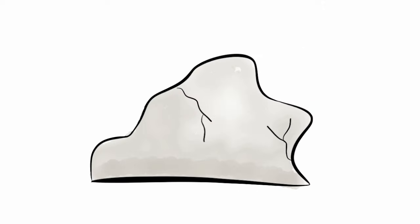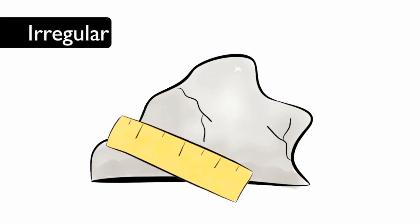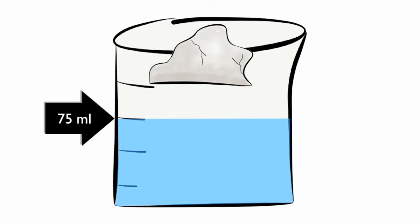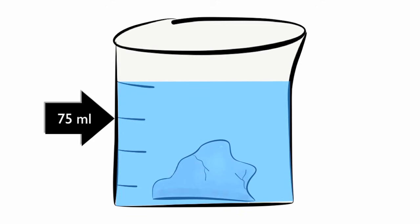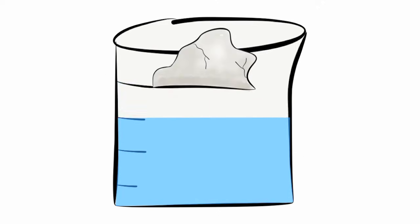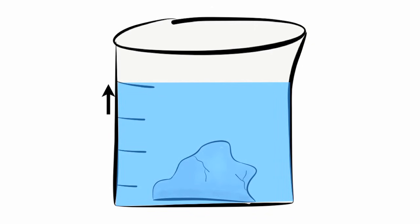The shape of a rock is described as an irregular solid because it is not made up of simple shapes. As a result, we need to find the volume of the rock in a different way. To find the volume of an irregular solid, fill up a beaker with a known amount of water. The amount that the water moved is 25 milliliters, and that is also the volume of the rock.